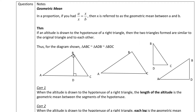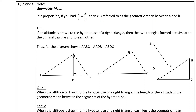Hey everybody, it's Mr. N, and we are going to do this next lesson on similar right triangles. First of all, let's start off with the geometric mean. In a proportion, if you had A over X equals X over B, X is going to be referred to as the geometric mean.